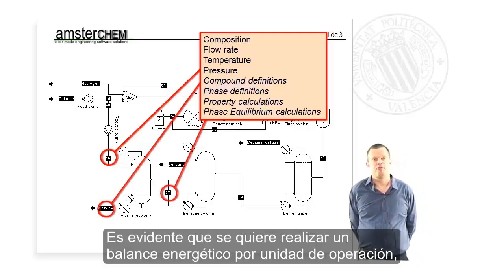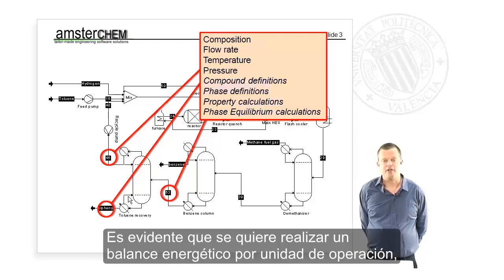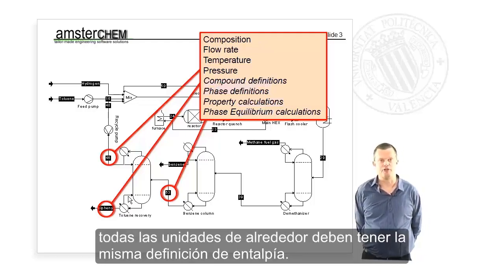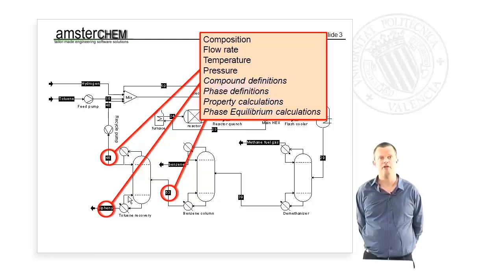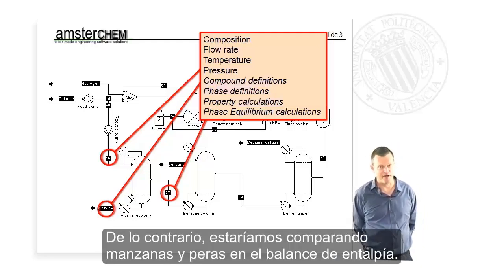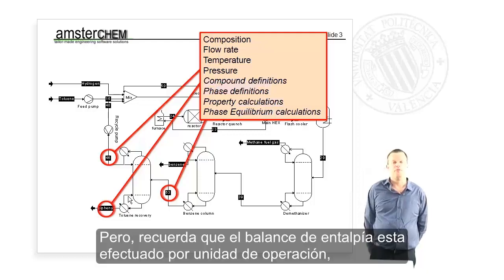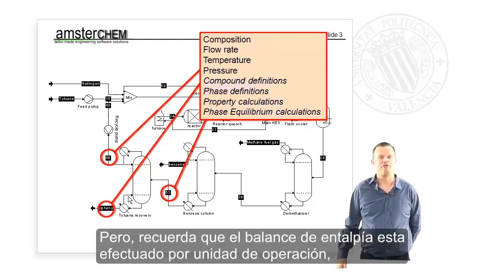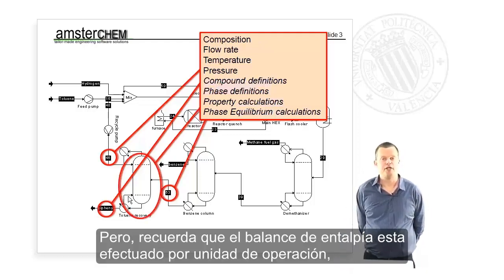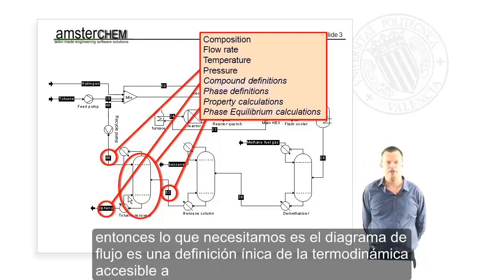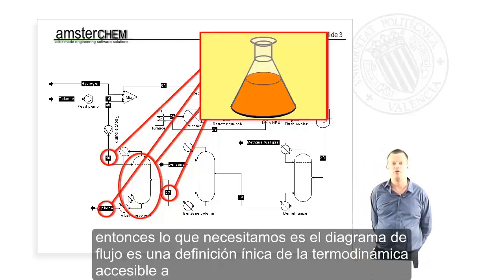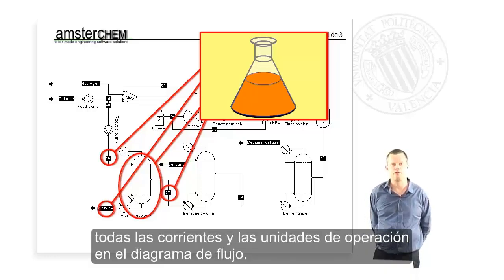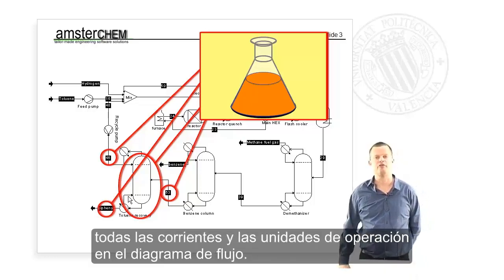If we want to perform an energy balance around a unit operation, all the streams around that unit operation must have the same definition of entropy, otherwise we would be comparing apples and pears in the entropy balance. Since the energy balance is performed by the unit operation, what we need in the flow sheet is one single definition of thermodynamics that is accessible to all the streams and all the unit operations in the flow sheet.